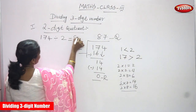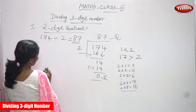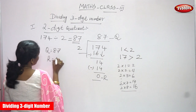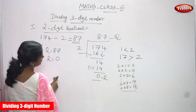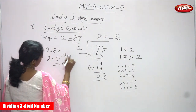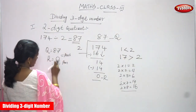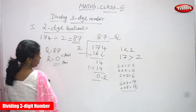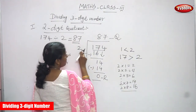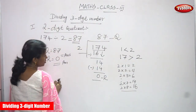The answer is 87 — a two-digit quotient. Quotient is 87 and remainder is 0. So dividing the three-digit number 174 by the single-digit number 2 gives a two-digit number as the quotient. The heading is two-digit quotient — and you can get a two-digit quotient as an answer. I think you understand this sum clearly.